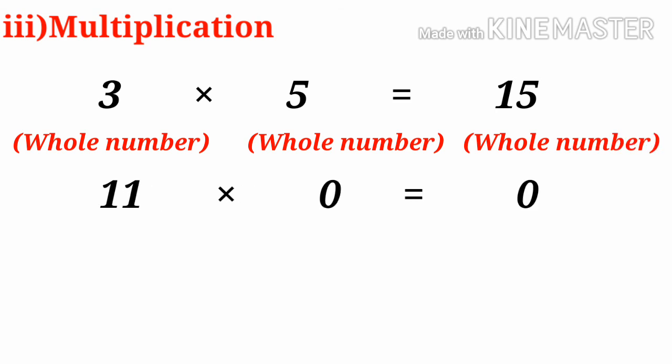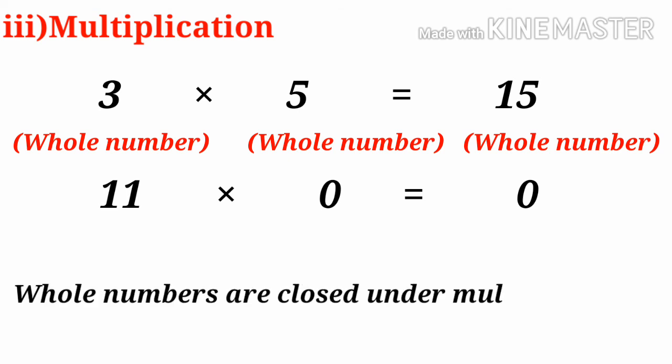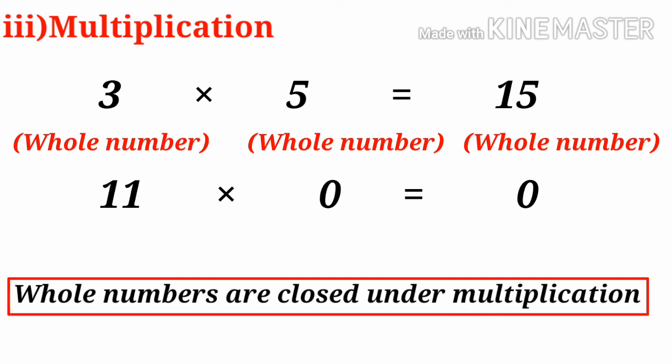11 into 0 is also 0. The product of any two Whole Numbers is always a Whole Number. So, we can say that Whole Numbers are closed under Multiplication.